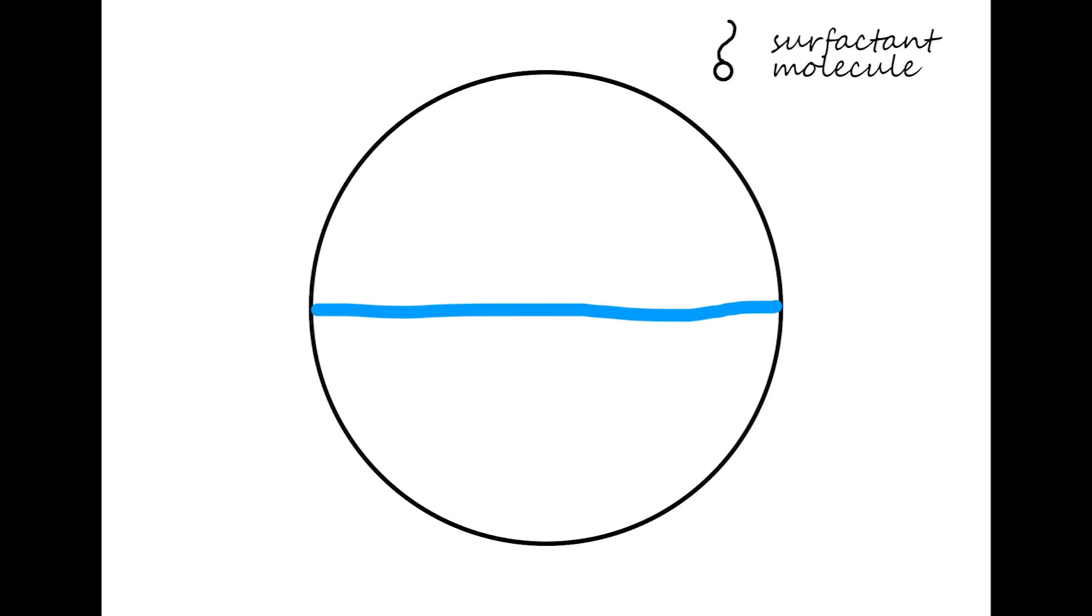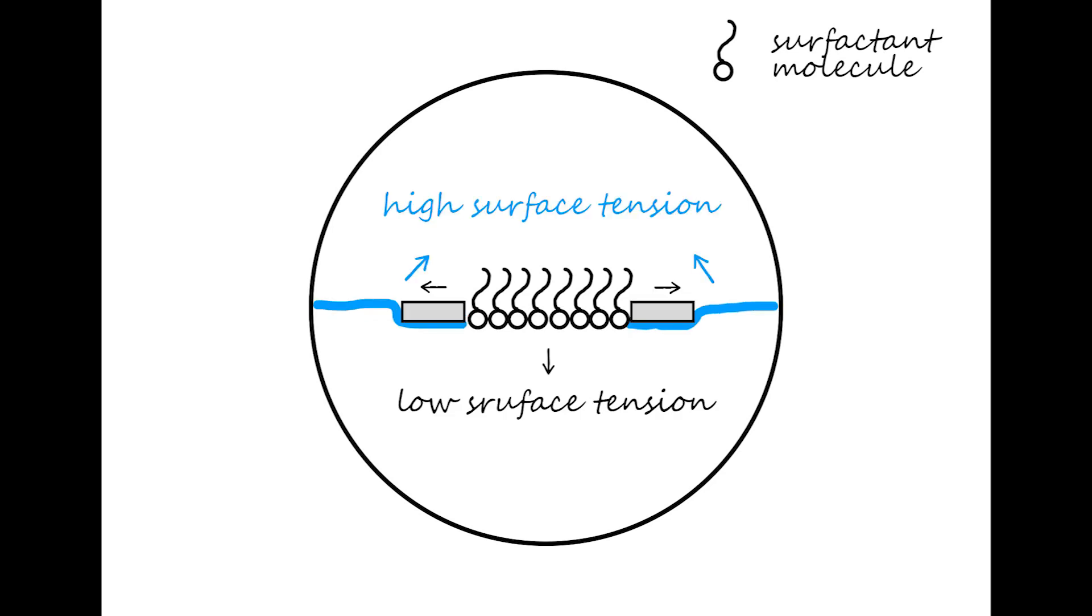Detergent is basically surfactant. The surfactant molecule has a hydrophilic part and a hydrophobic part. What happens on the surface of water is that the hydrophilic parts are in the water and the hydrophobic parts are pointing to the air, forming a thin layer between the water and air, which reduces the surface tension. And all of the particles scatter to the edges.